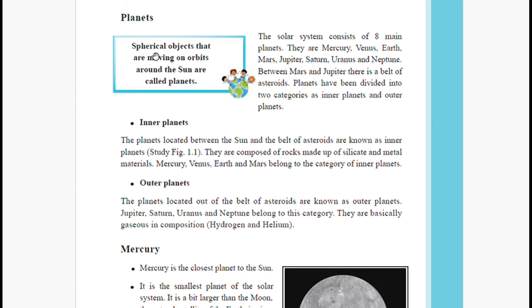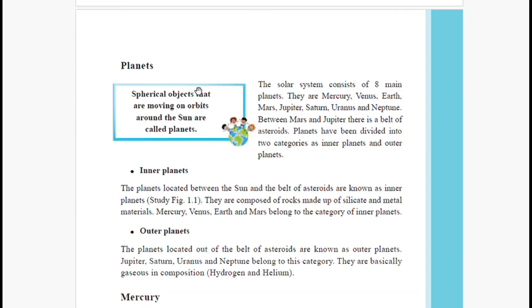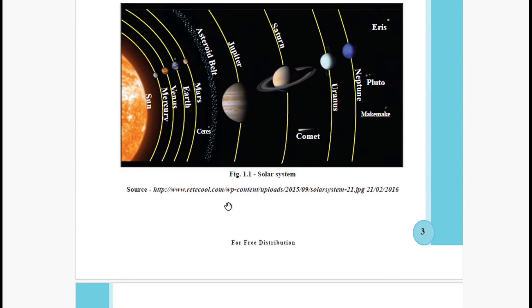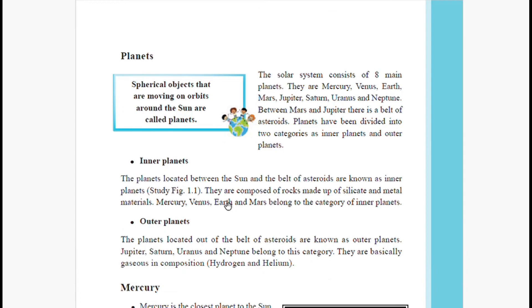Planets are spherical objects that are moving on orbits around the sun. Each planet has its own orbital path. The solar system consists of eight main planets: Mercury, Venus, Earth, Mars, Jupiter, Saturn, Uranus, and Neptune.